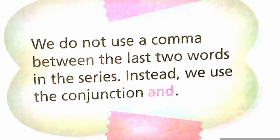Now let's recap the chapter. There are 14 punctuation marks that are commonly used in English grammar. They are: the period, question mark, exclamation point, comma, semicolon, colon, dash, hyphen, parenthesis, brackets, braces, apostrophe, quotation marks, and ellipses.